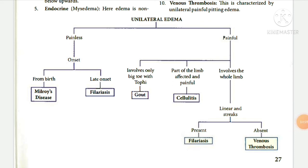In unilateral edema: if it is Milroy's disease, it is present from birth and is genetic, with painless edema. Filariasis has late onset; the edema is painless. Painful edema is seen in gout, cellulitis, and venous thrombosis. In cellulitis, the whole limb is involved with linear streaks present. Venous thrombosis is also painful pitting edema.